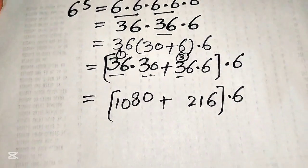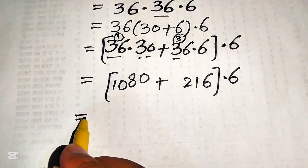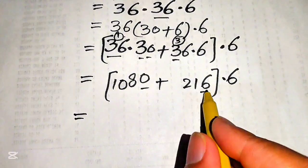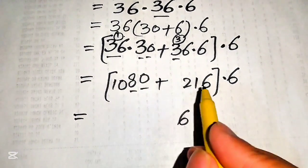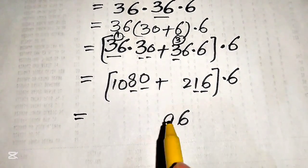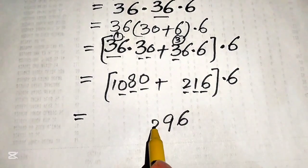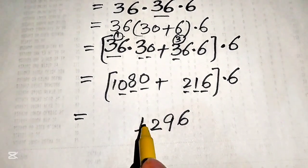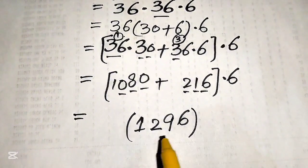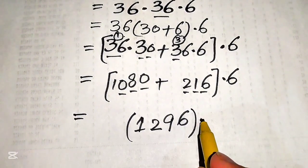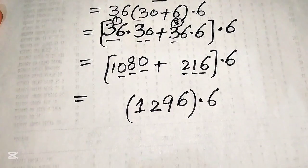We move forward and add these two values: 0 plus 6 equals 6, 8 plus 1 becomes 9, 0 plus 2 equals 2, and this is our 1. So here our final step is to multiply this bigger number with 6.